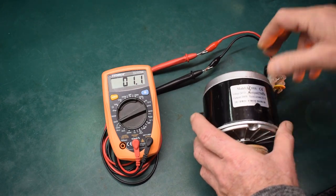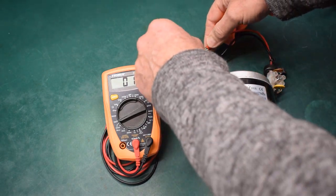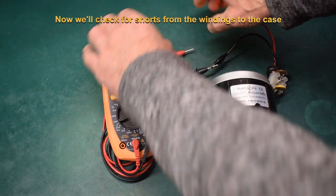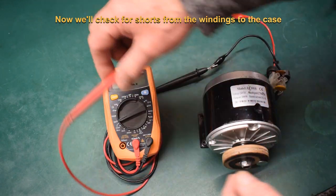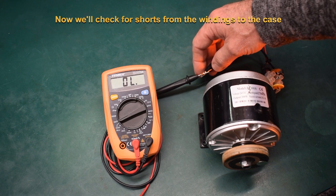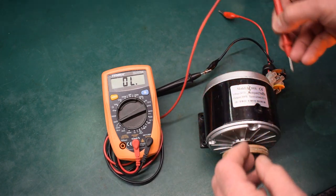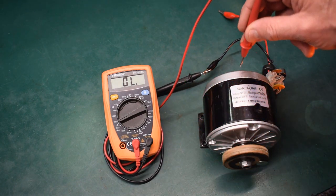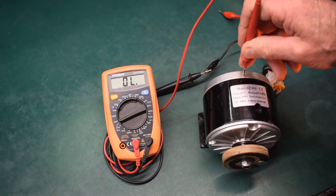The next test to do on the motor is to check for continuity between the windings and the case. We'll leave one leg of the motor connected to one brush on the motor and then we'll place the other probe on the casing of the motor here.